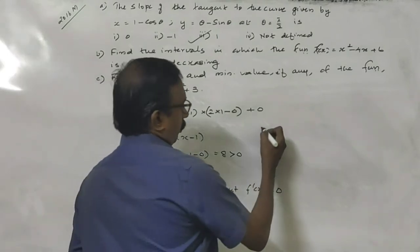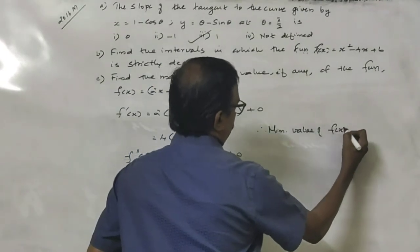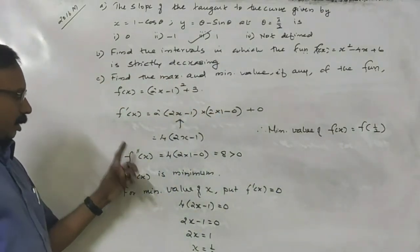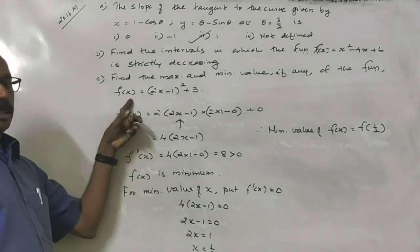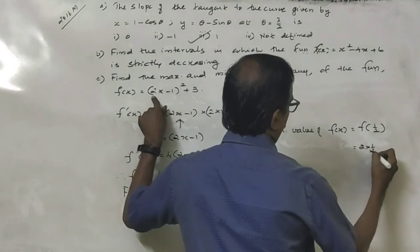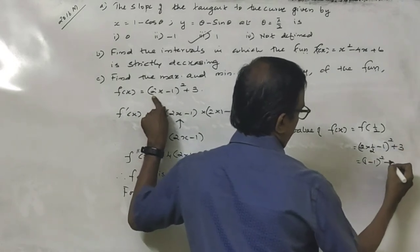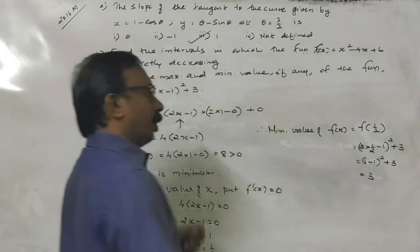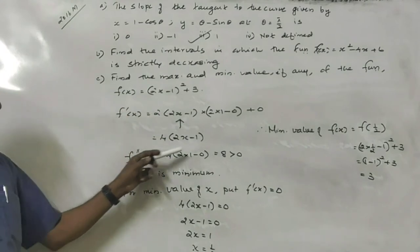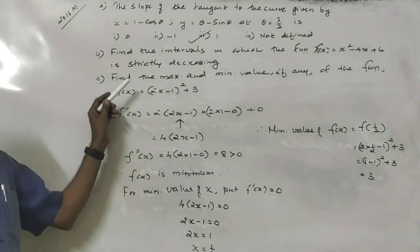Find the minimum value of f. Minimum value of f(x) is f(1/2). Substituting x equals 1/2: 2 into (2 times 1/2 minus 1) squared plus 3, which gives (1 minus 1) squared plus 3, equals 3. The minimum value of the function is 3. There is no maximum value since f''(x) is greater than 0, confirming the function is minimum.